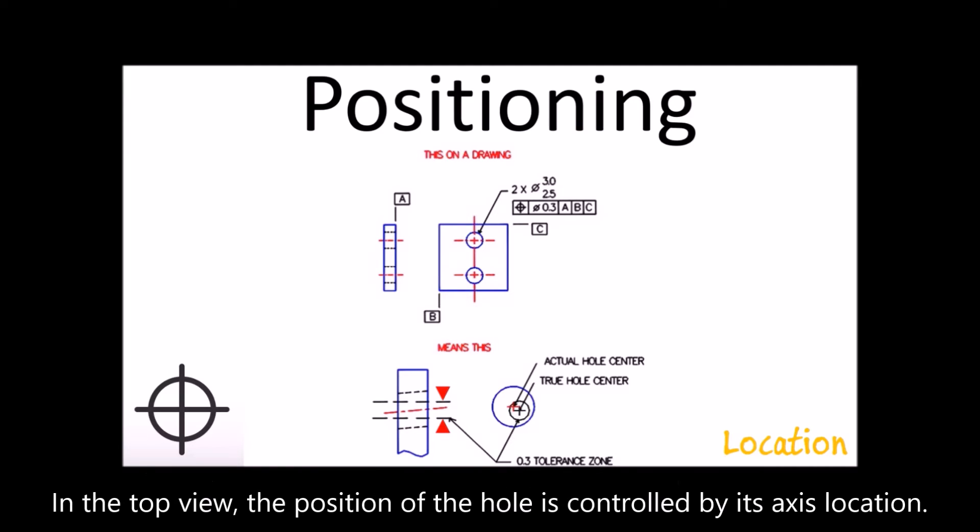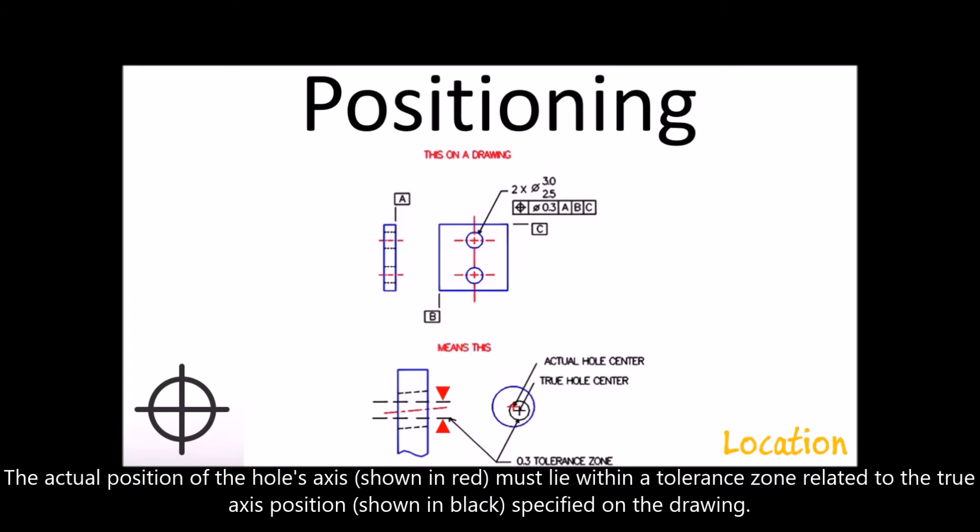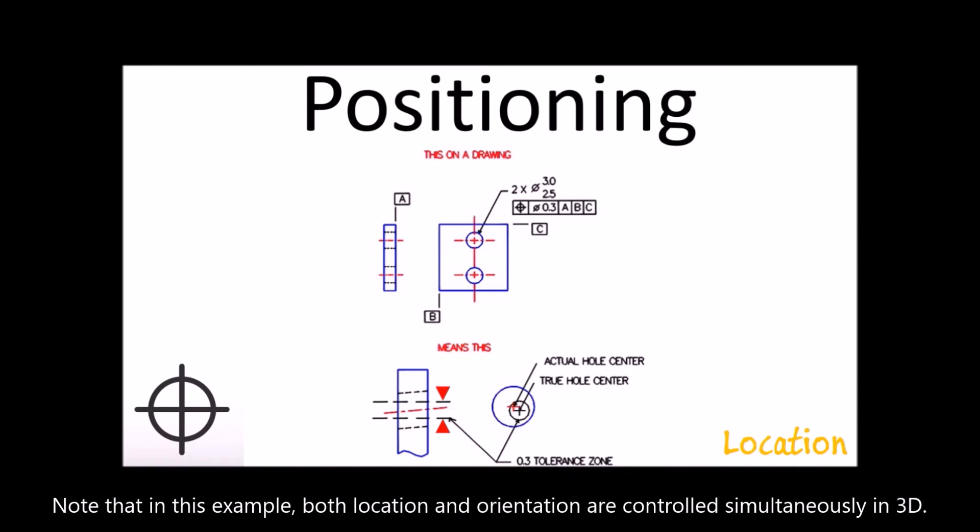In the top view, the position of the hole is controlled by its axis location. The actual position of the hole's axis must lie within a tolerance zone related to the true axis position specified on the drawing. Note that in this example, both location and orientation are controlled simultaneously in 3D.